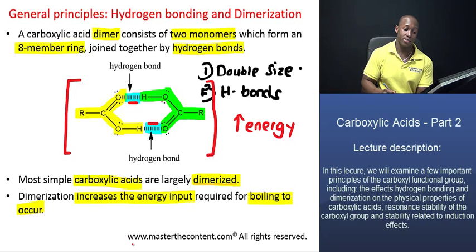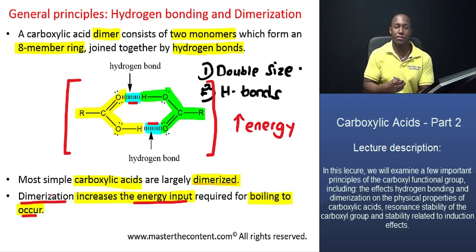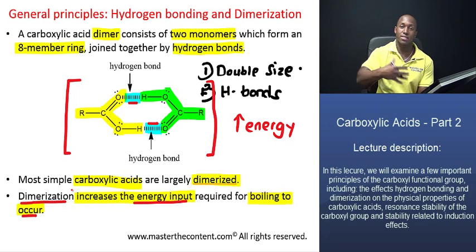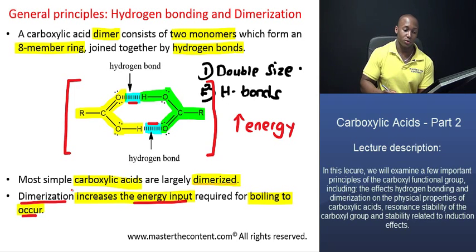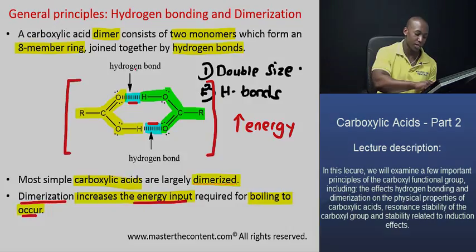Both of those processes will require significant additional input of energy. And for that reason, dimerization will increase the energy required for boiling to occur. That is how dimerization affects the physical properties of carboxylic acids — it increases the energy input required for boiling, and for that reason acids will have higher boiling points than compounds of comparable molecular weight.